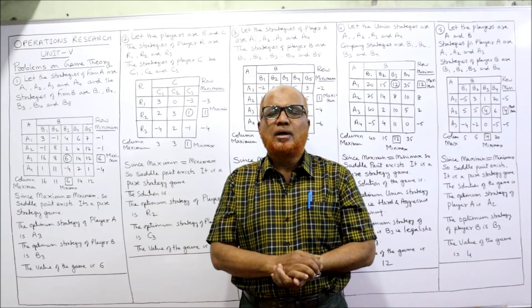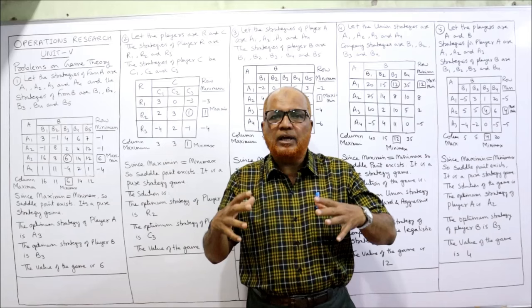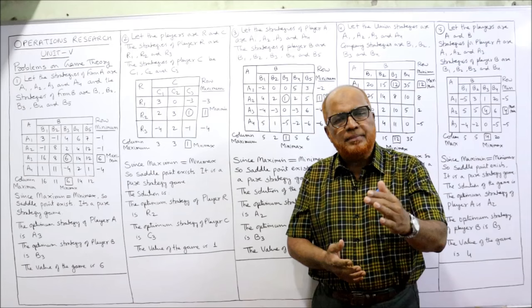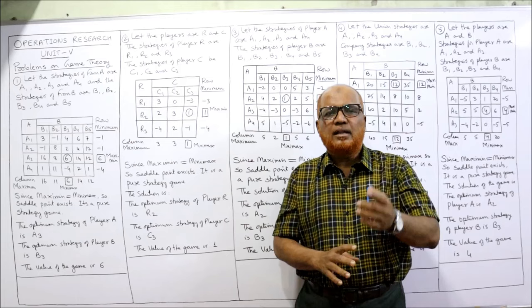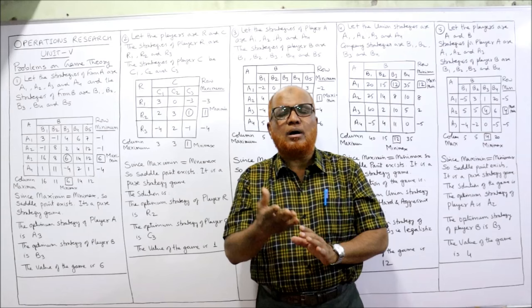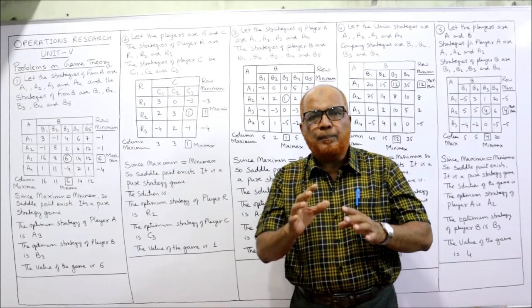Assumptions of game theory: every player is a rational and intelligent player, having full information about the rules of the game and finite alternative courses of action. Next, we discussed the two-person zero-sum game — when a game consists of only two participants where the gain of one party is exactly equal to the loss of the other party. The payoff is the outcome of the game, represented in a matrix form with rows and columns.